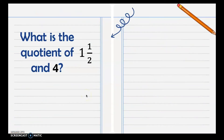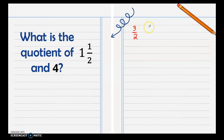Let's have more examples. What is the quotient of 1 and 1 half divided by 4? The mixed number 1 and 1 half is changed to the improper fraction 3 over 2. For the whole number 4, write it as 4 over 1, then get its reciprocal since it is the divisor: 1 over 4. Multiply 3 over 2 by 1 over 4 to get 3 over 8. There is no common factor between 3 and 8, so the answer is 3 eighths.